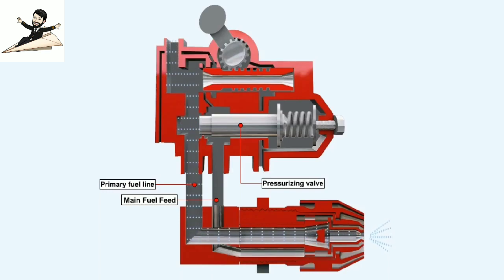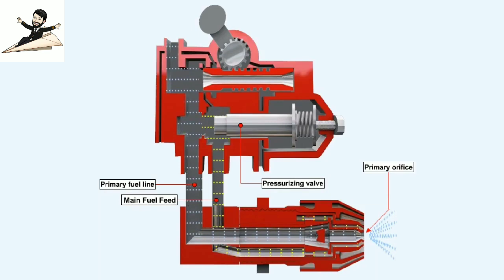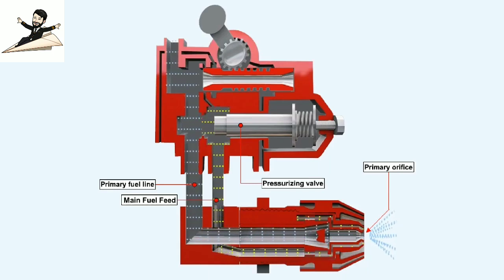The duplex system, shown here with the duplex spray nozzle, effectively uses an orifice of variable size. At low fuel pressures, a pressurizing valve closes off the main fuel feed to the nozzle, with the only supply coming from the primary fuel line. The primary fuel line feeds the primary orifice, a relatively small hole capable of providing a finely atomized spray at lower fuel pressures. When the engine accelerates during start, fuel pressure builds until the pressurizing valve starts to open. This allows fuel to flow through the main orifice where it supplements the spray of fuel from the primary orifice.